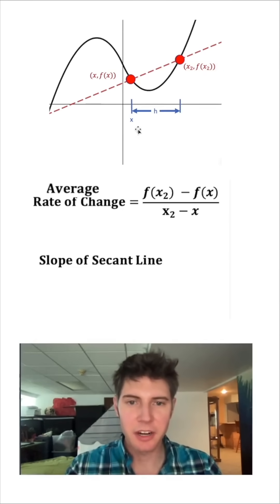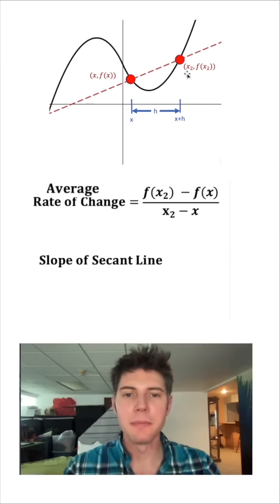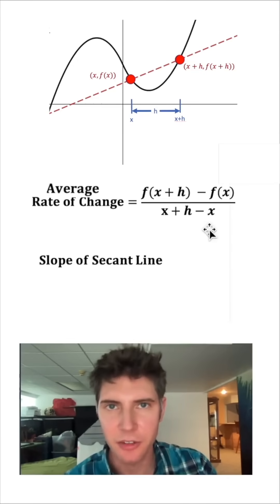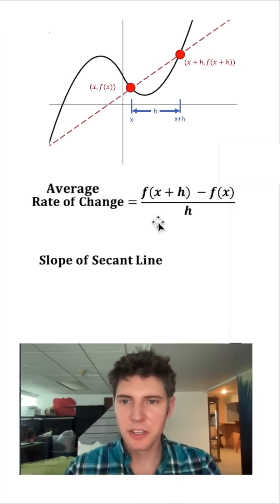That will make this dash mark here x plus h, which would then make this x2 and x plus h. And this f of x2 and f of x plus h. And we can change them over here. This positive x and this negative x are gonna cancel. So we just have an h on bottom. Let's move this down here.